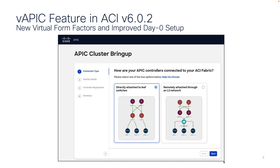The first choice you're going to have to make is how do you want to connect these virtual APICs to your environment? One of the choices — which we'll call directly attached, and that's the way we've always done it with physical APICs — is where your virtual APICs and the ESX hosts where they're running are directly attached over a physical cable directly to the leafs, and you can discover and manage your fabric just like you always have.